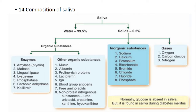Composition of saliva: saliva has a water content of 99% and solids of 0.5%. Among the solids, there are organic and inorganic substances and gases. Organic substances include enzymes, mucin, and albumin. Inorganic substances include sodium, calcium, potassium, and bicarbonate. Gases include oxygen, carbon dioxide, and nitrogen. Normally, glucose is absent in saliva, but it is found in saliva during diabetes mellitus.